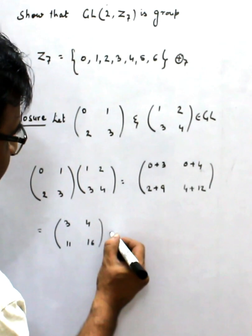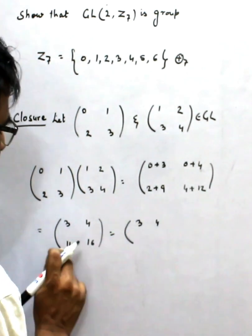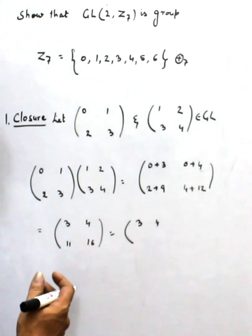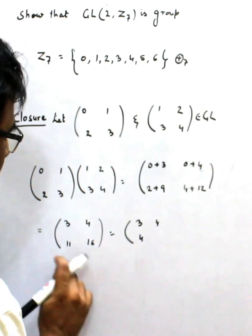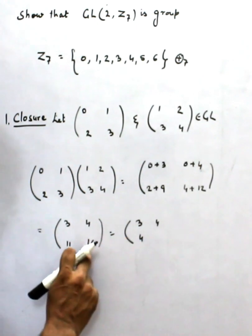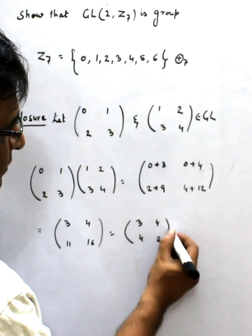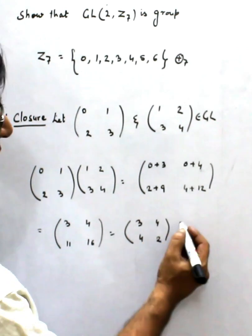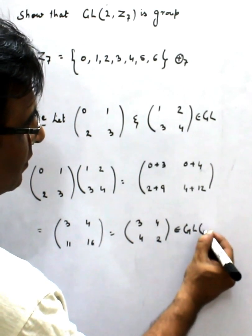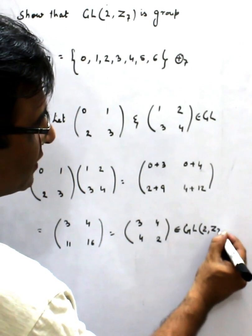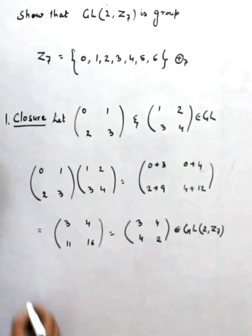Dividing by 7: 3 and 4 remain the same. For 11, by the definition of congruence, dividing by 7 gives remainder 4. For 16, dividing by 7 gives remainder 2. So the result is [3, 4; 4, 2], and these elements obviously belong to GL₂(Z₇). So the closure property is satisfied.